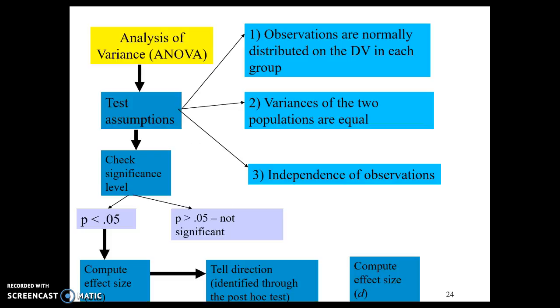So here's how the whole thing works. We decide we're doing ANOVA. We test the assumptions of normally distributed observations, homogeneity of variance, and then independence of observations. We're going to assume through data collection that that is true.